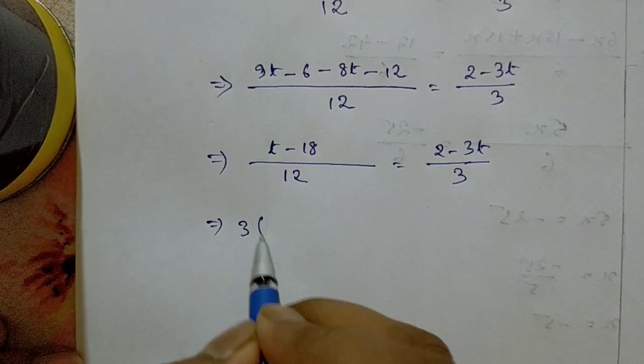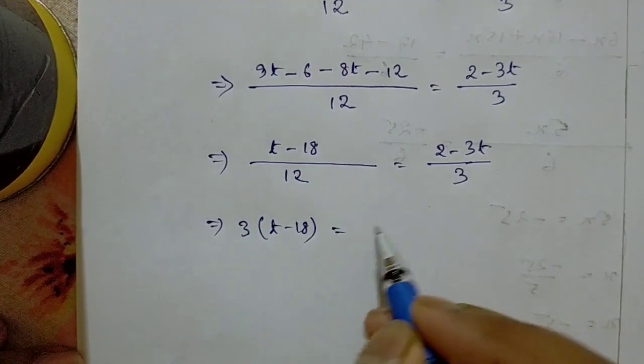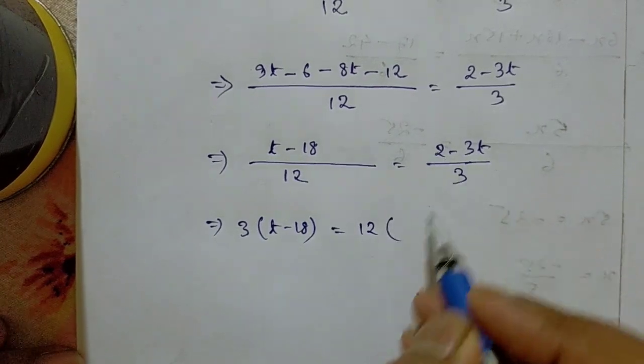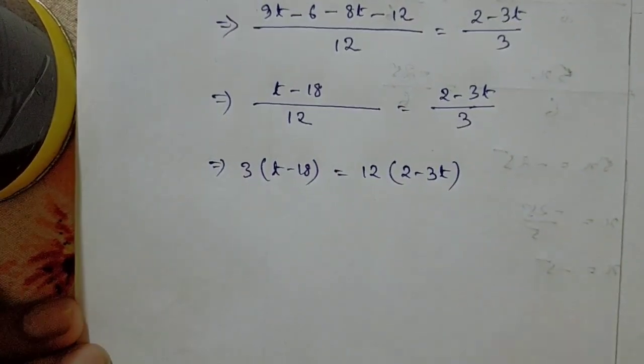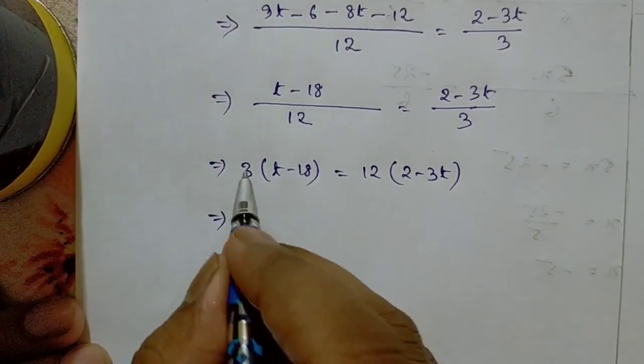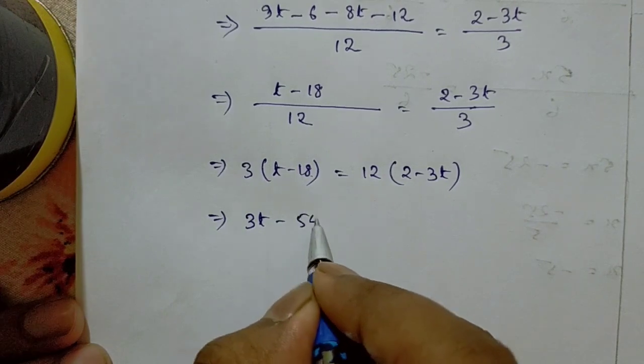So 3 times (t - 18) is equal to 12 times (2 - 3t). 3t minus 3 times 18 is 54, equals 12 times 2 minus 12 times 3t.